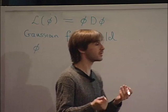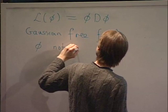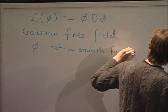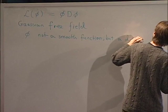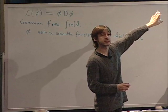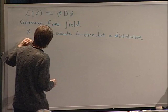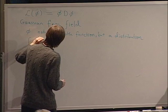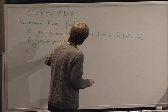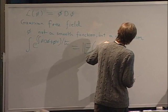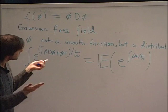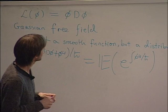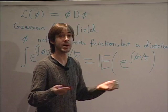As Scott explained, phi is in fact not a smooth function but a distribution with probability one. The quantities physicists are interested in — for this phi-fourth theory — would be the expectation value of e to the integral of phi-fourth over h-bar for the Gaussian free field. We can see why this doesn't make sense: not just because it's infinite dimensional, but because phi is a distribution with probability one. You can't multiply it by itself.